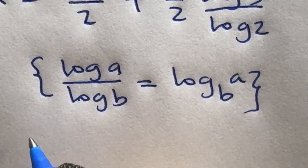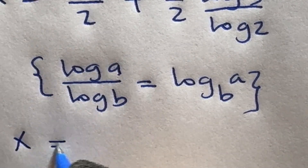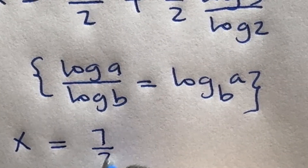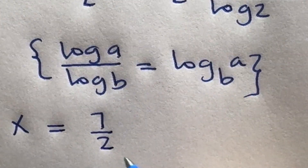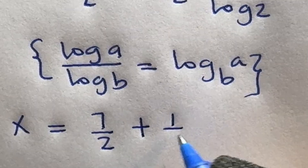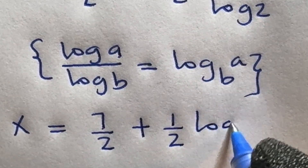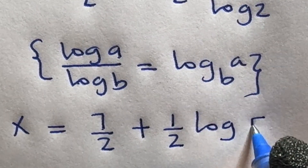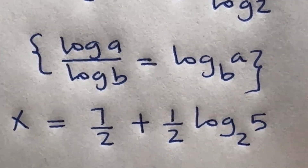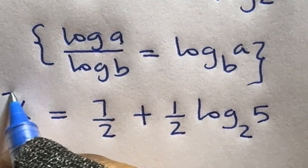So our x becomes 7 over 2 plus 1 over 2 log 5 base 2, which would be our final answer.